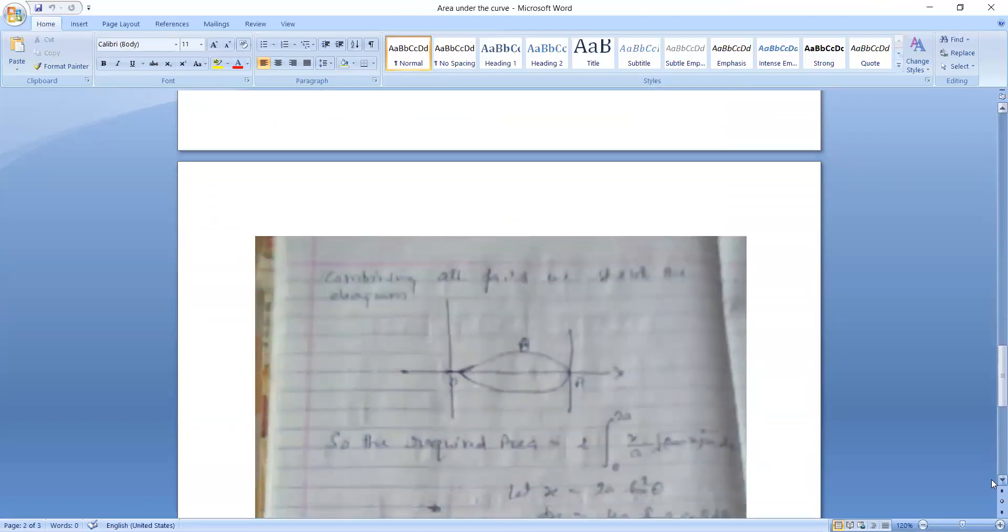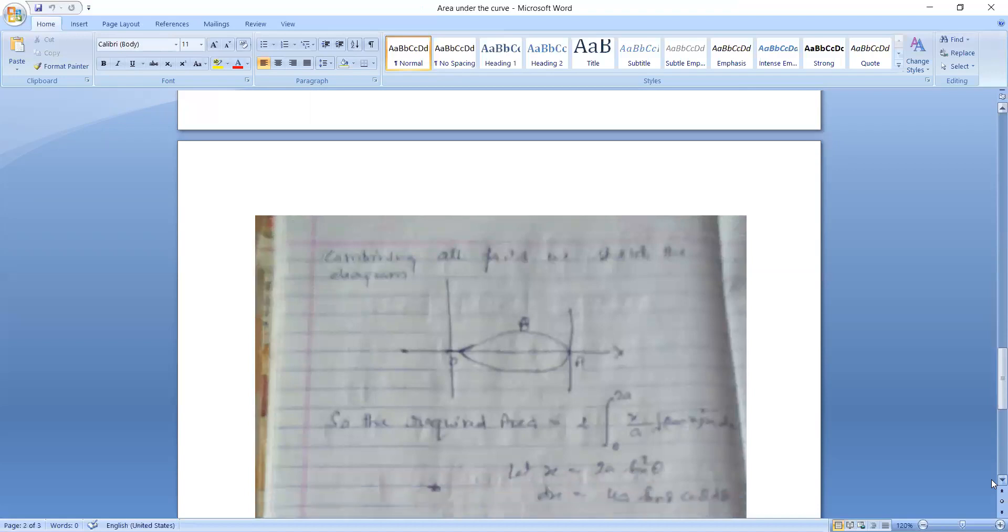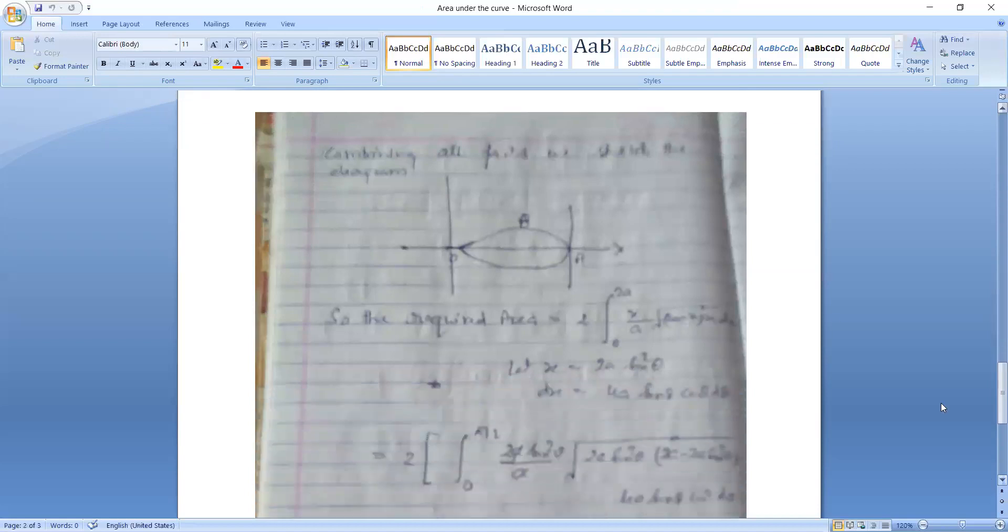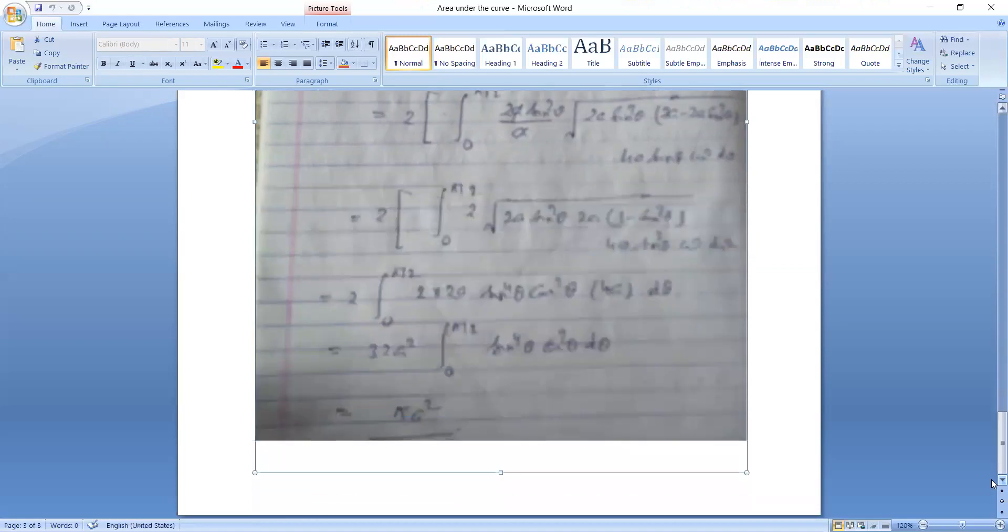Combining all the facts we sketch the diagram like this. So the required area is 2 integral 0 to 2A X upon A root 2A minus X into root X dx. Now putting X is equal to 2A sin square theta and solve the integral, then the answer is pi A square.